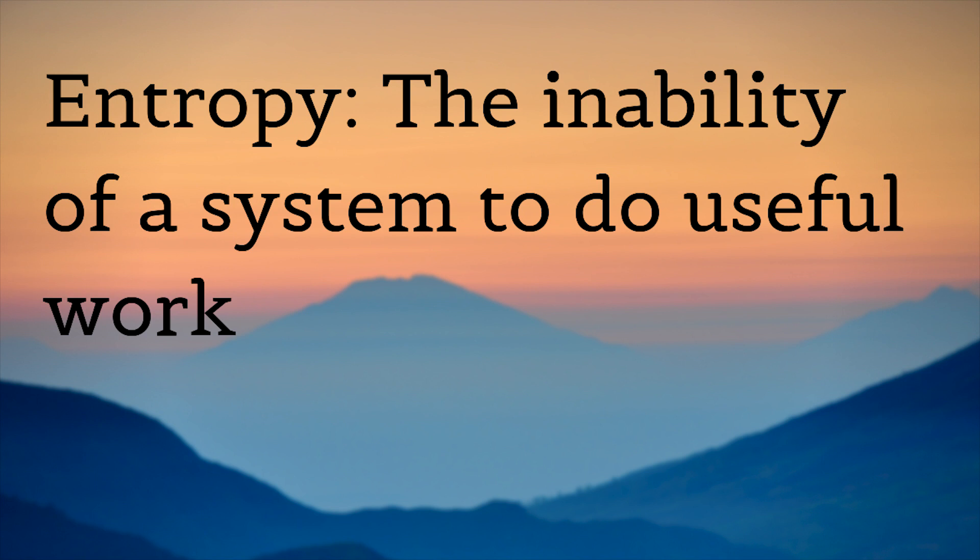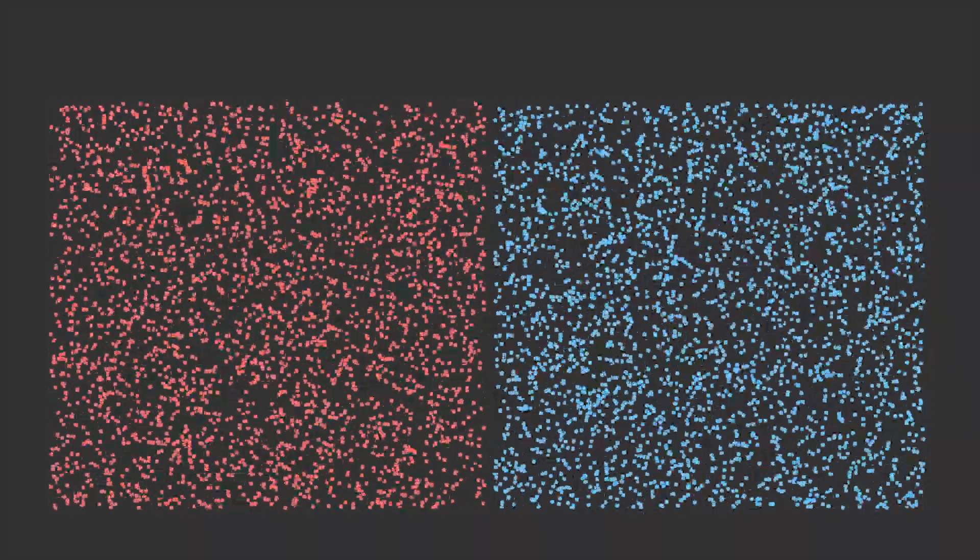What is entropy? Let's define entropy as the inability for a system to do useful work. The initial system I showed you has very low entropy. It's completely isolated from the outside, but slowly the ability for that system to do work decreased to zero, even without any outside intervention, and no useful work can come out of the system.